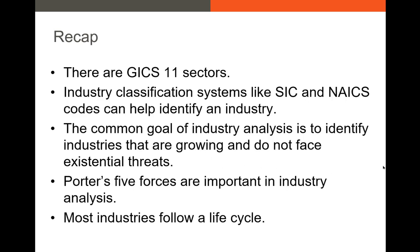To recap: there are 11 GICS sectors and many other classification systems like SIC codes and NAICS codes that help us identify an industry and its competitors. The goal of industry analysis is to identify industries that are growing and don't face existential threats — we don't want to be invested in the buggy whip industry instead of the electric vehicle industry in 2020. Porter's Five Forces is a very important tool, and most industries follow a life cycle: high growth, maturation, then relative decline. If you have any questions, just reach out. Thanks.